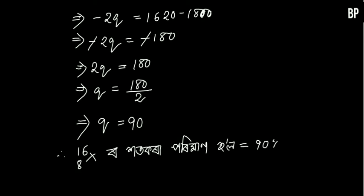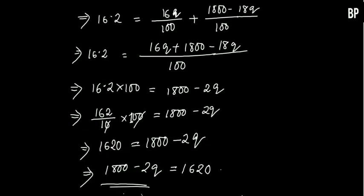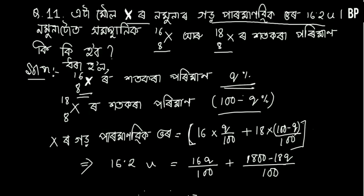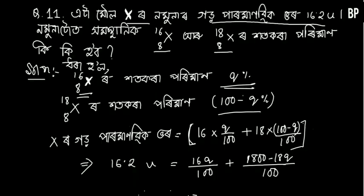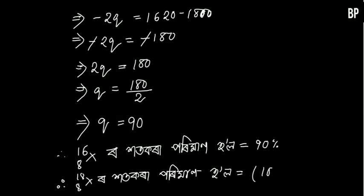Verification: with Q = 90%, we get 16 × 90% plus 18 × 10% = 14.4 + 1.8 = 16.2. The answer is confirmed: Q = 90 percent.